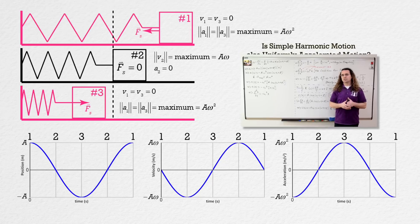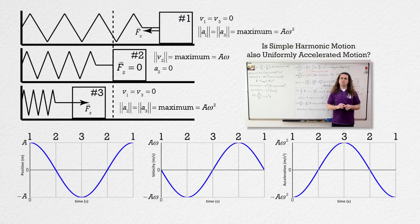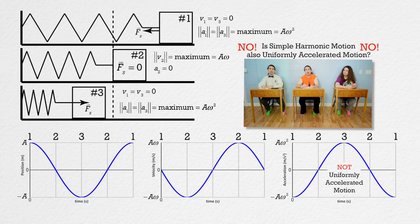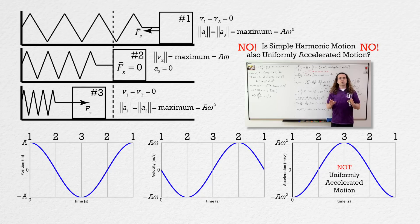An important question: is simple harmonic motion also uniformly accelerated motion? No. If you look at the graph of acceleration as a function of time, you can clearly see the acceleration is not a horizontal line, so it is not a constant acceleration. Therefore it is not uniformly accelerated motion. Please remember, simple harmonic motion is not uniformly accelerated motion.